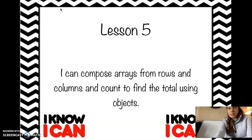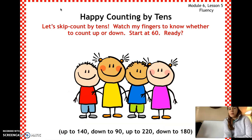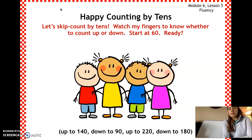Alright, let's get started. For today we're going to do happy counting again, but today it's going to be counting by 10s. We're going to start at 60 and first count up by 10s, then count down by 10s. You're going to have an adult, brother, sister, or somebody help by pointing up or down so you know which way to count.